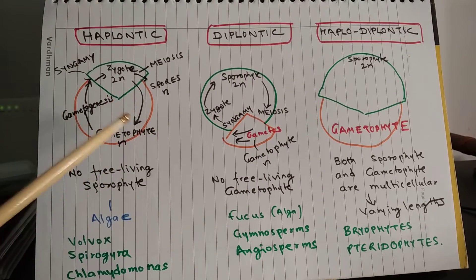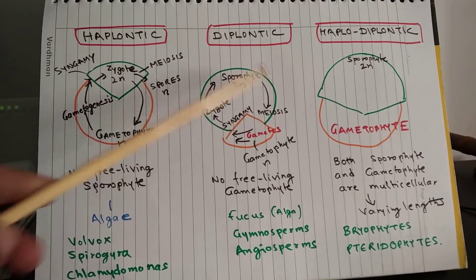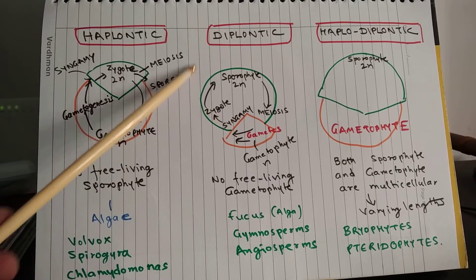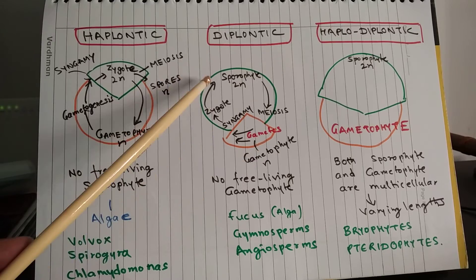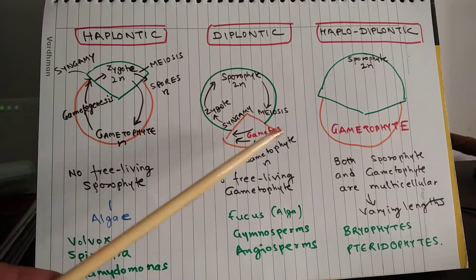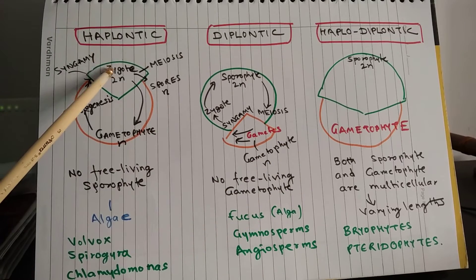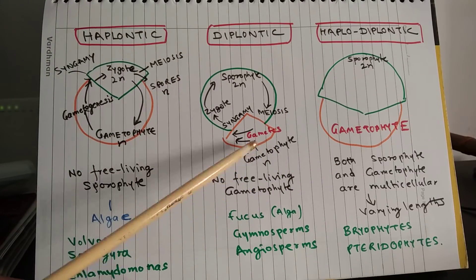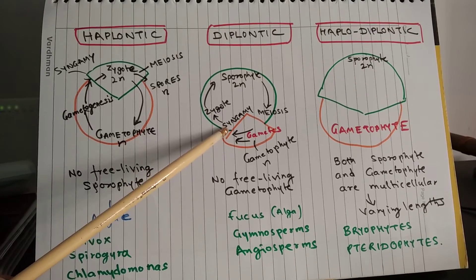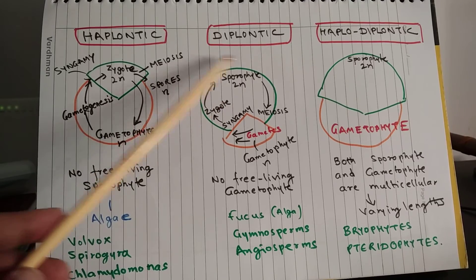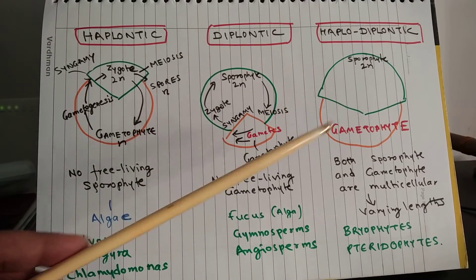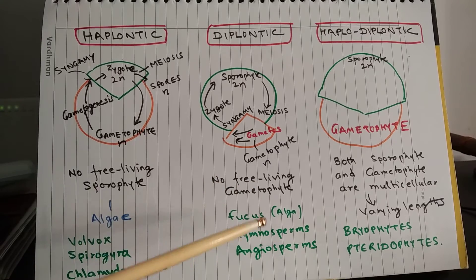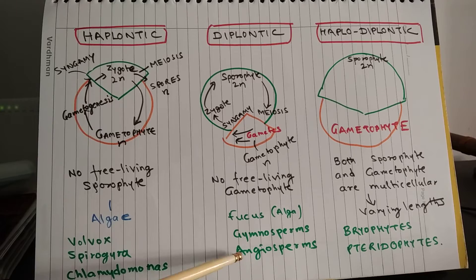This figure shows the diplontic phase, and now you can see the green portion of the circle has become much bigger compared to the orange portion. The gametophyte phase is not free-living and the sporophyte phase is free-living; gametophyte phase depends on sporophyte phase. The gametophyte phase here is usually a single cell structure. The pattern is the same: gametophyte produces gametes, then syngamy takes place and the sporophyte phase begins. Sporophyte produces spores by meiosis, and once spores are produced, the gametophyte phase begins. This condition is seen in one alga — Fucus — and is present in gymnosperms and angiosperms.